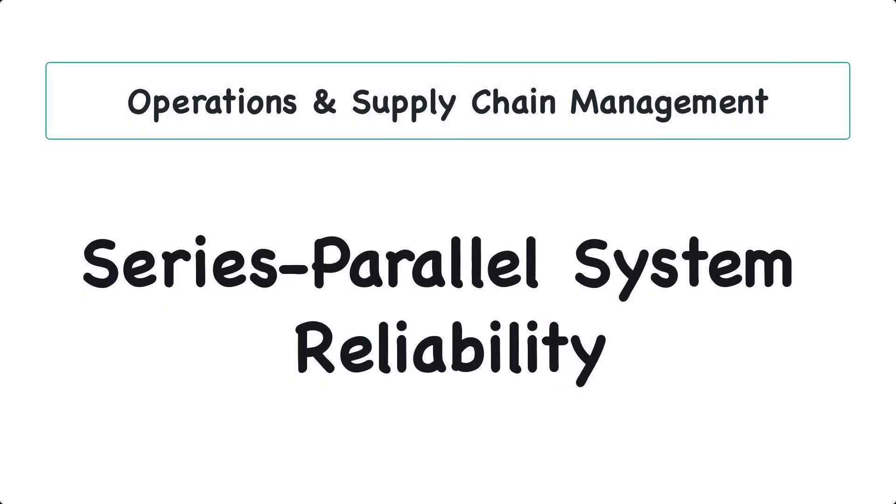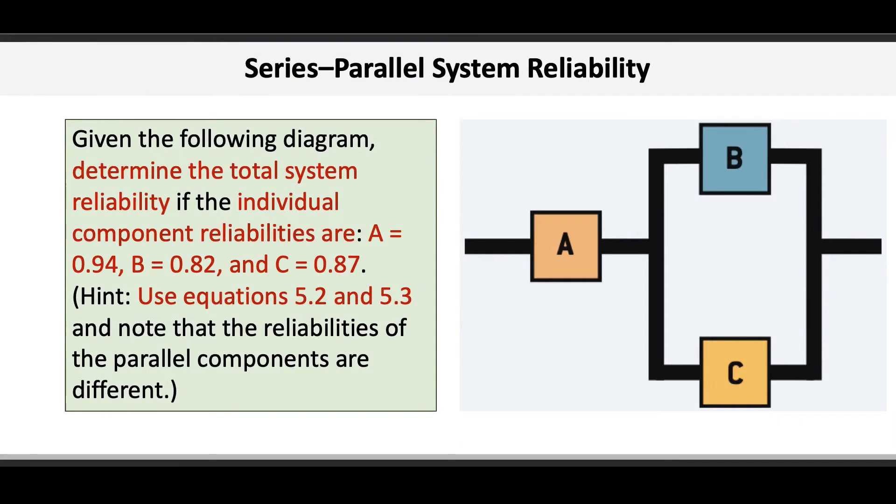This video provides a walkthrough on how to calculate the reliability of a series-parallel system. Our objective for this problem is to take this diagram and determine the total system reliability if the individual component reliabilities are 0.94 for A, 0.82 for component B, and 0.87 for component C. We're given a hint here as well to use equations 5.2 and 5.3.